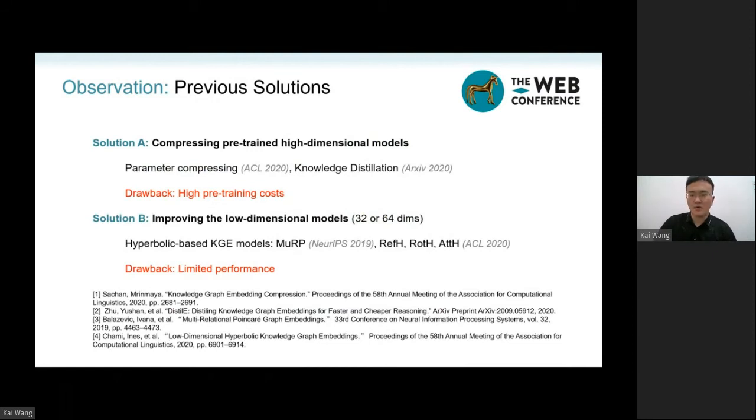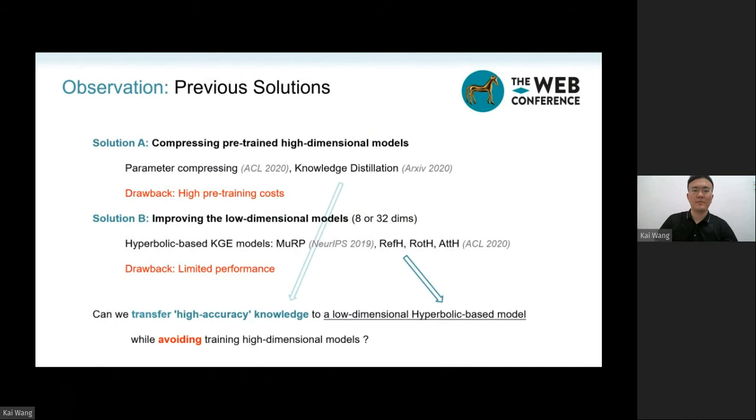the capacity of low dimensional vector space is limited, and the model hardly gets the knowledge gathered by high dimensional models. So, can we combine the advantages of the two solutions?